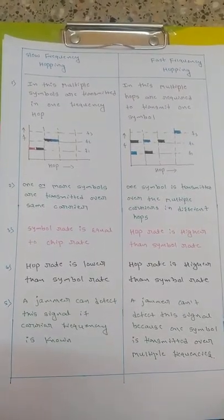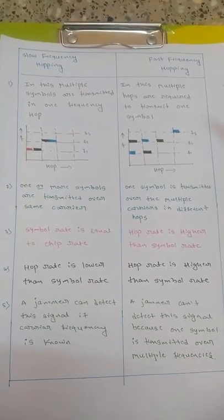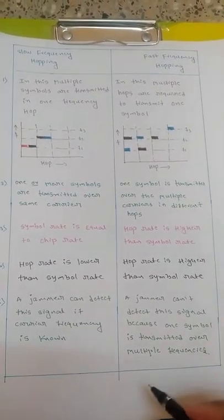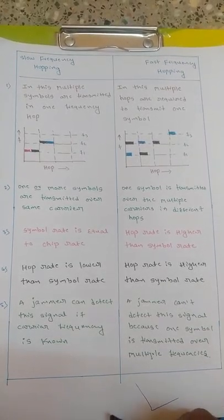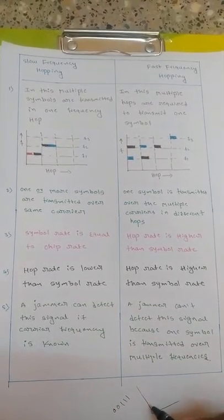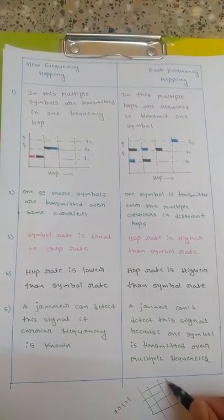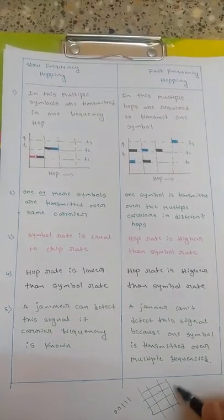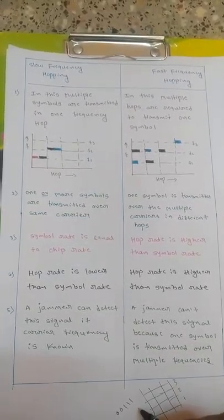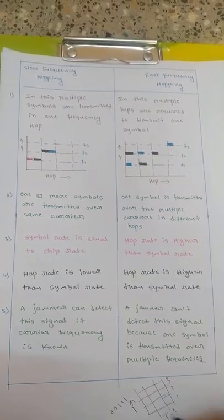Let's move on to our topic: slow frequency hopping versus fast frequency hopping. As we know, hopping is something like — suppose you are having data and we are dividing the frequency, that is our bandwidth, into different frequencies: 1, 2, 3. This is the frequency axis and this is the time axis.